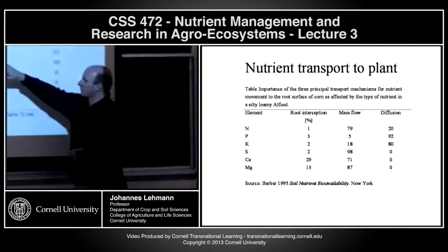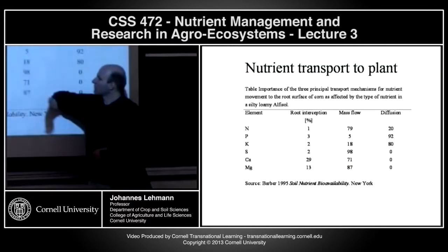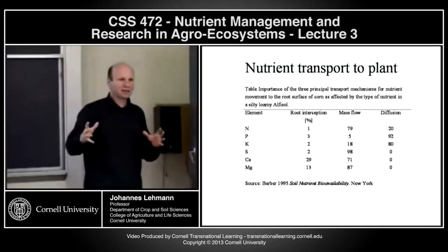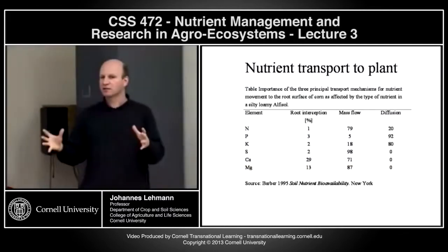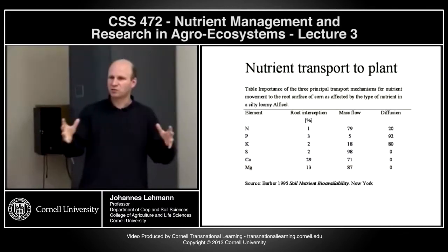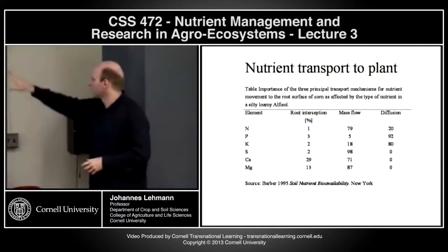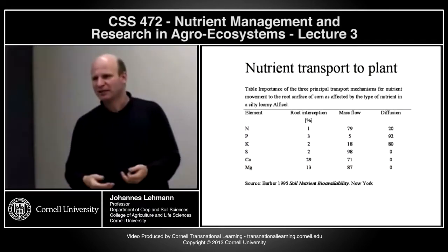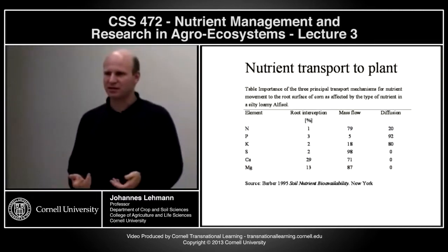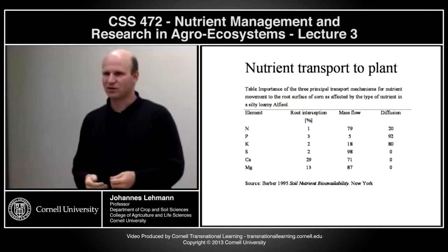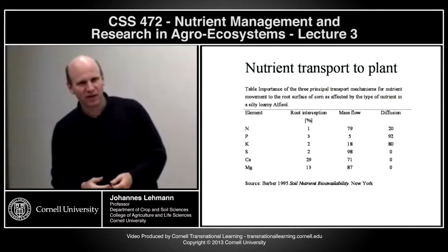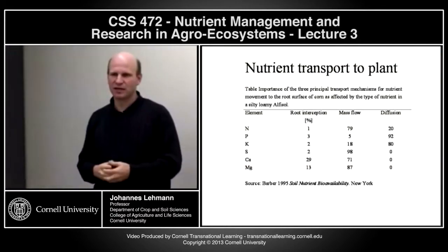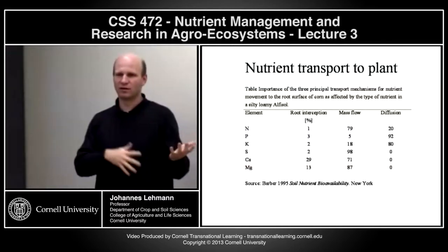Phosphorus is very different. Root interception is again very low. Mass flow is also very, very low. So phosphate is not really transported with the water to the root surface, but diffusion plays a huge role. Now that we know more about in which form phosphorus is present in soil, why would that be? Why is it diffusion and not mass flow for phosphorus, whereas nitrogen relies more on mass flow than diffusion?